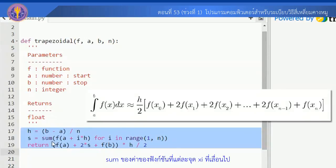ผลรวมจะถูกรวมไว้ใน s และสุดท้ายเราจะมี return statement คือ f(a) + 2*s + f(b) คูณด้วย h หารด้วย 2